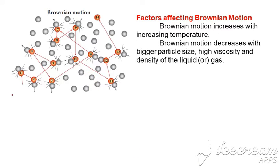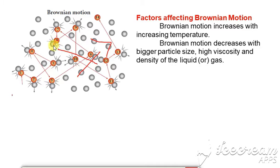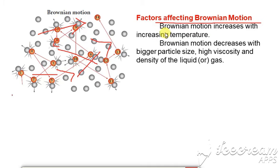This is how a particle will be moving in random direction — it moves in all possible directions, whatever it wants. Next, what are the factors affecting Brownian motion? Brownian motion increases with increasing temperature.